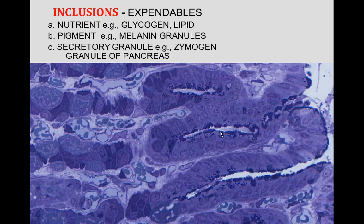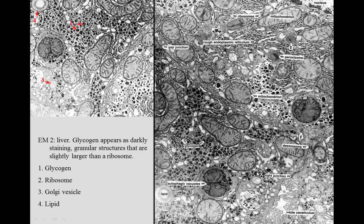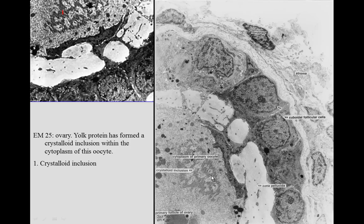We can see those again, and these help protect the stomach from being digested. If you look at an electron micrograph, you can see another inclusion, which is glycogen. The glycogen forms little rosettes in through there, and they're larger than the ribosomes you see on the rough endoplasmic reticulum — so these are inclusions. Autophagic vacuoles will ultimately make an inclusion, which would be lipofuscin granules. Lipid is another inclusion that we might see. Crystalline structure in the egg is also an inclusion.